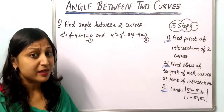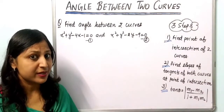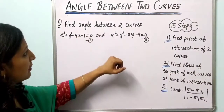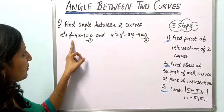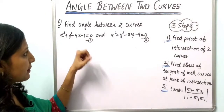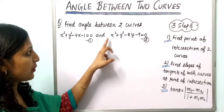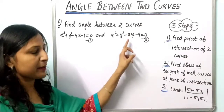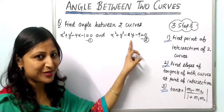Our first question is: find the angle between the two curves x² + y² − 4x − 1 = 0 and x² + y² − 2y − 9 = 0.